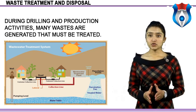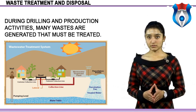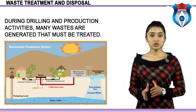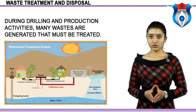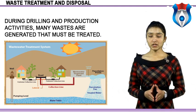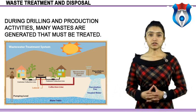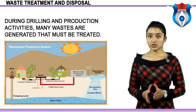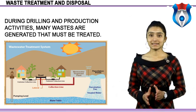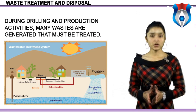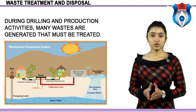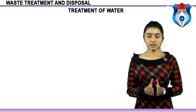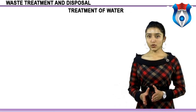For many wastes, treatment is required prior to final disposal. A variety of treatment methods are available for most wastes, but not all methods can be used on all waste streams. The different treatment methods vary considerably in effectiveness and cost. Most waste treatment processes involve separating a waste stream into its individual components, for example removing dissolved or suspended hydrocarbons and solids from water, or removing hydrocarbons from solids.